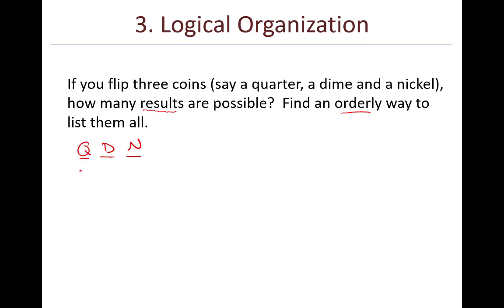Find an orderly way to list them all. So let's see, we have a quarter, dime, and nickel. And so one result might be tail, tail, head. Another result might be head, tail, tail. Another result might be all heads. But these are kind of randomly ordered here. How would you make a list, an orderly list that includes all the possible results for the three coins? Pause the video for a second, give it a try, and then start up again when you're ready.